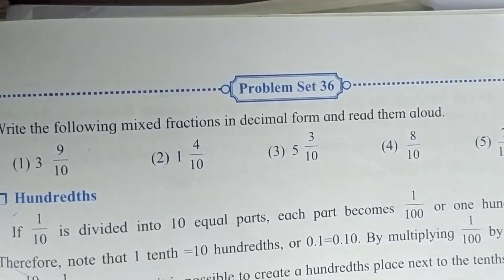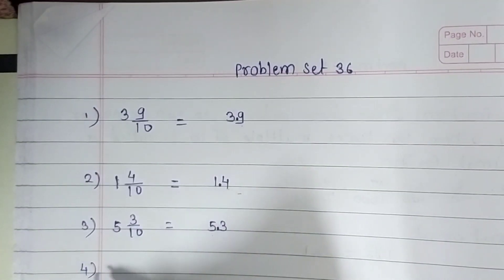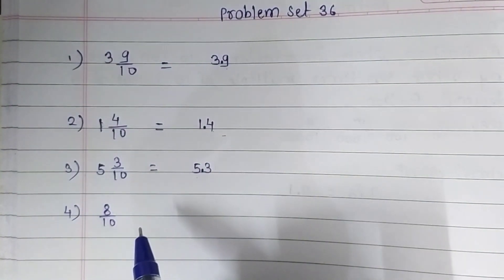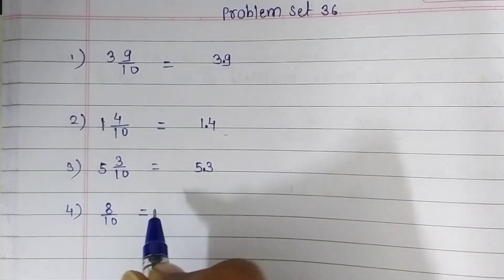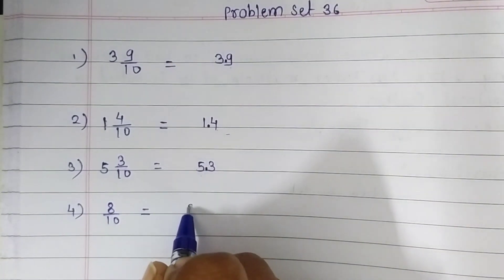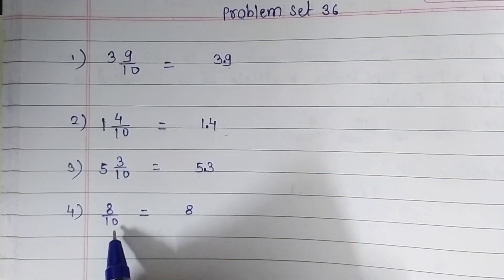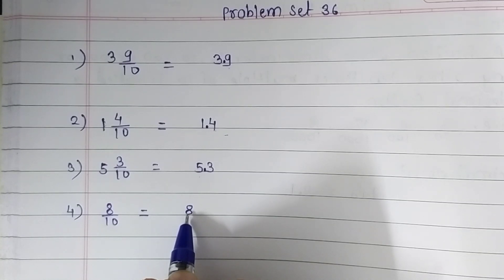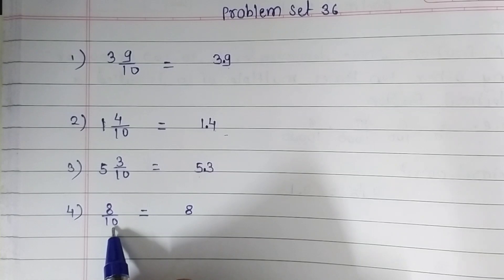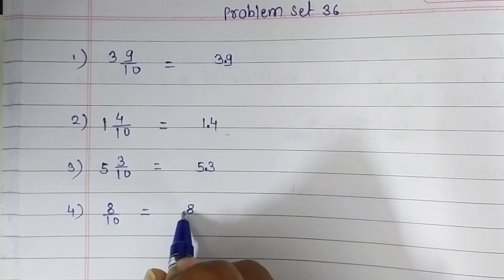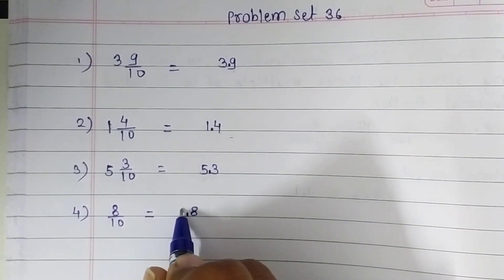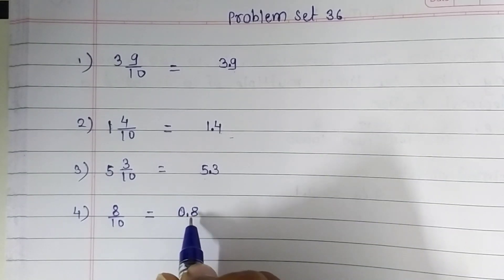Now the fourth question is 8 upon 10. Here they give us only a fraction — it is not a mixed fraction. So just ignore the denominator and write our numerator, which is 8. We have to leave one decimal place, then put a decimal point, because the denominator has only one zero. Since there is no whole number, we put a zero in its place. Our fraction is 0.8.